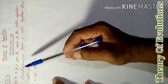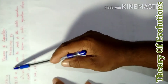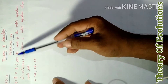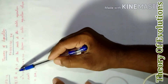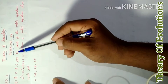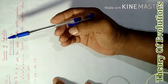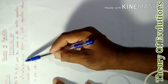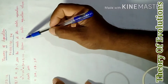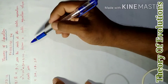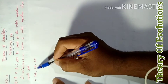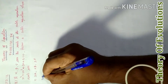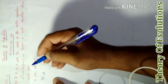Good morning students. Today our 12th standard chapter is Theory of Equations, Exercise 3.1, the third sum. If alpha, beta, gamma are the roots of the cubic equation x³ + 2x² + 3x + 4 = 0, form a cubic equation whose roots are 2α, 2β, 2γ.